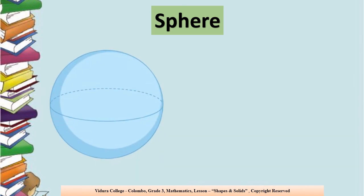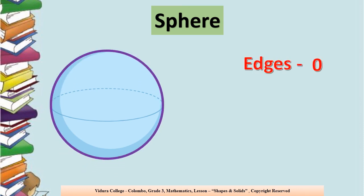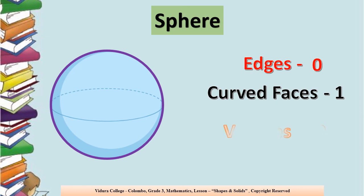Sphere. How many edges are there in the sphere? None — zero. We can't find any edges in the sphere. And how many curved faces in the sphere? There is only 1 curved face. Can you see any vertices — or corners? No, we can't find any vertices in the sphere — none.